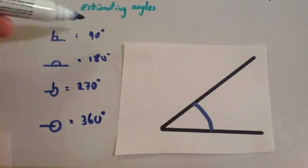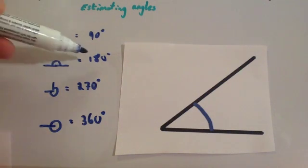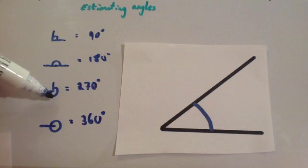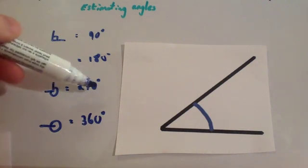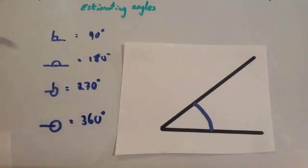So remember a right angle is 90 degrees, a straight line is 180, three quarters of a turn would be 270 degrees, and a full turn is 360 degrees.